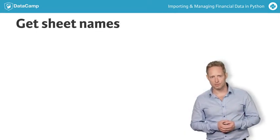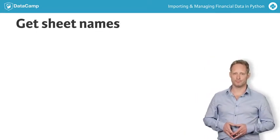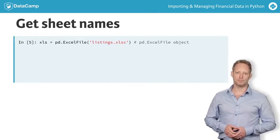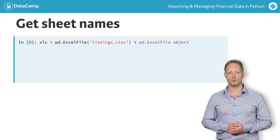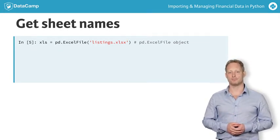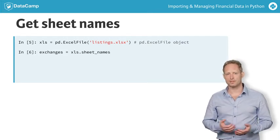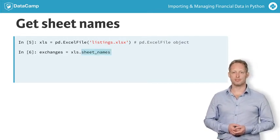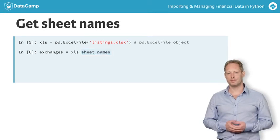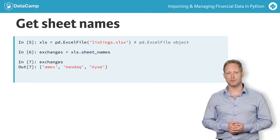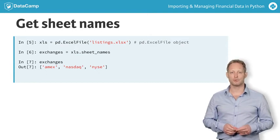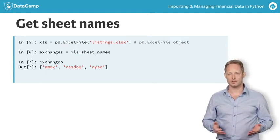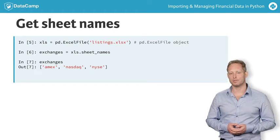Pandas also allows you to retrieve the sheet names from an Excel workbook. To obtain this information, create an Excel file object using the path to an Excel workbook, as illustrated here for the listings Excel .xlsx file. Once you have created this object, you can access its sheet_names attribute. This attribute contains a list with the names of the worksheets for this workbook. Here we retrieve the list of all the exchange names and assign it to a variable called exchanges.